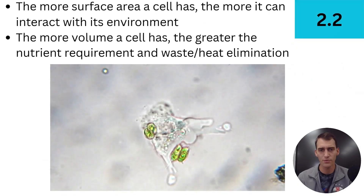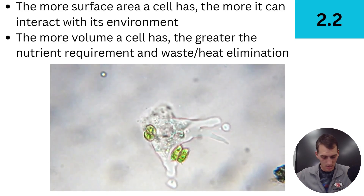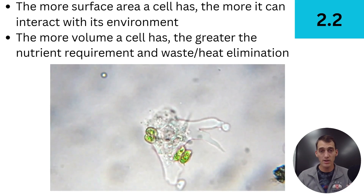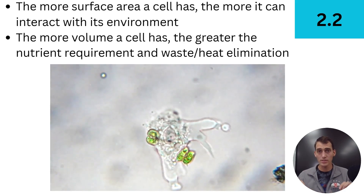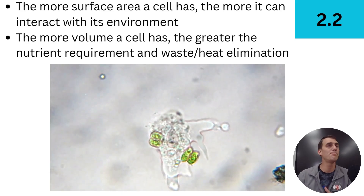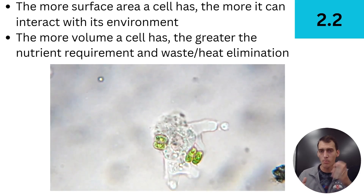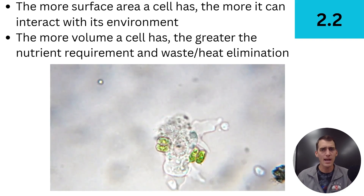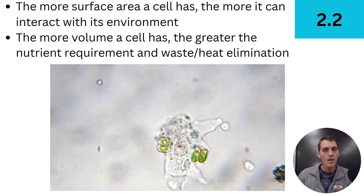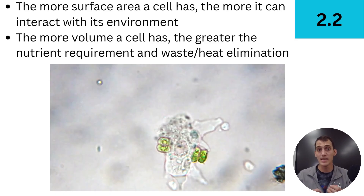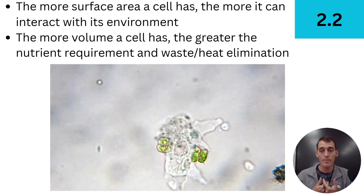Now let's go down to the size of cells. You have a surface area — your skin is exposed to your environment, and that is surface area. The more surface area a cell has, the more it can interact with its environment. It has more of itself touching the environment to exchange with it. But the more volume a cell has, the greater its nutrient requirement and the greater its need for waste and heat elimination. Volume is how much space something takes up. So the more volume something has, the greater the energy, nutrient, and waste elimination requirements. The more surface area it has, the more it can interact with its environment.